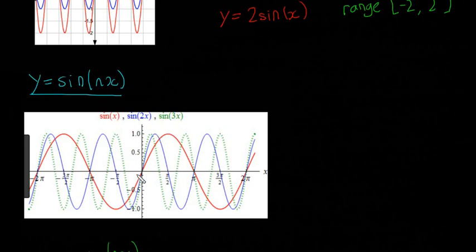And then the green one, sine of 3x, so it's 3 before the x now, goes up, down, up, down, up, down. So it does three repetitions before red does one repetition. So you see basically the period is three times smaller, because it does three repetitions at the same time sine x does one.